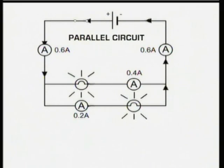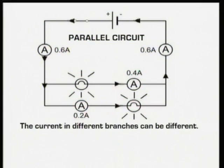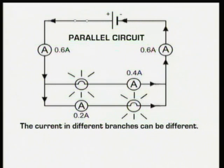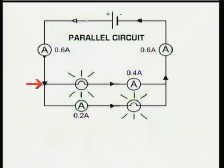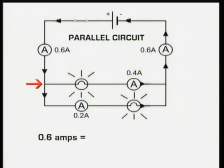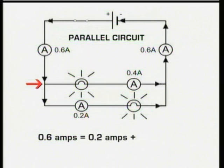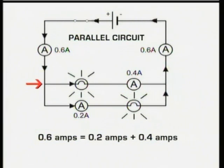This is a parallel circuit, where the current can split up and go round different branches of the circuit. The current flowing in different branches can be different depending on how easy it is for the current to flow that way. Ammeters connected in different branches of the circuit will show different measurements. The total current flowing into any point in a parallel circuit is the same as the total current flowing out of it. For example, at the junction where the wires join, there's 0.6 amps flowing in, and 0.2 amps flowing out down one branch, and 0.4 amps flowing out down the other — that's 0.6 amps altogether flowing out from that point.